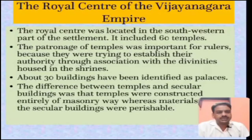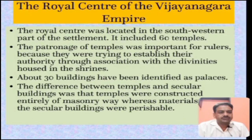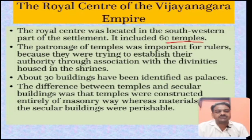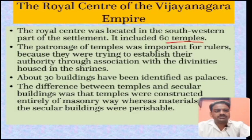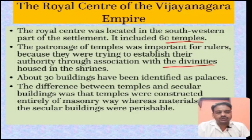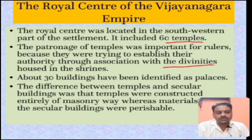The royal centre of Vijayanagara empire was the most important centre where the ruling elites lived. It was located in the south-western part of the settlement and included 60 temples. The patronage of temples was important for the ruler because they were trying to establish their authority through association with divinities. The ruler spent a lot of money on the maintenance of temples and shrines to attach themselves with the gods, issuing orders in the name of god Virupaksha - that is, Shiva - so that people would respect them and their orders would be followed religiously.